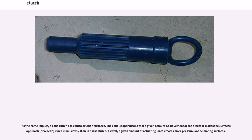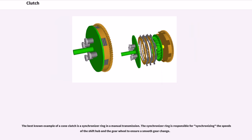As the name implies, a cone clutch has conical friction surfaces. The cone's taper means that a given amount of movement of the actuator makes the surfaces approach or recede much more slowly than in a disc clutch, and a given amount of actuating force creates more pressure on the mating surfaces. The best known example of a cone clutch is a synchronizer ring in a manual transmission, which is responsible for synchronizing the speeds of the shift hub and the gear wheel to ensure a smooth gear change.